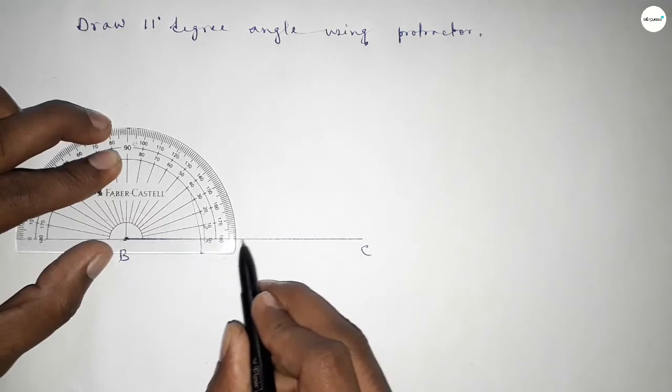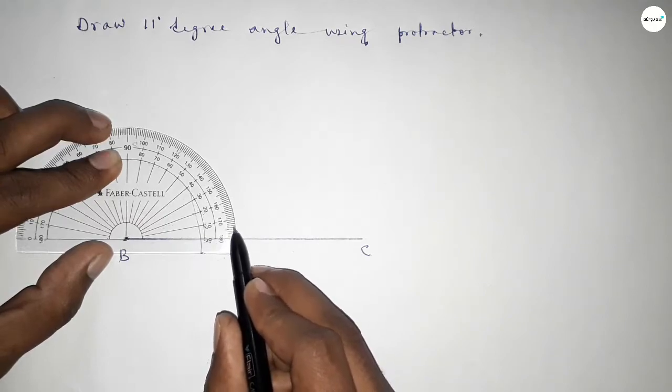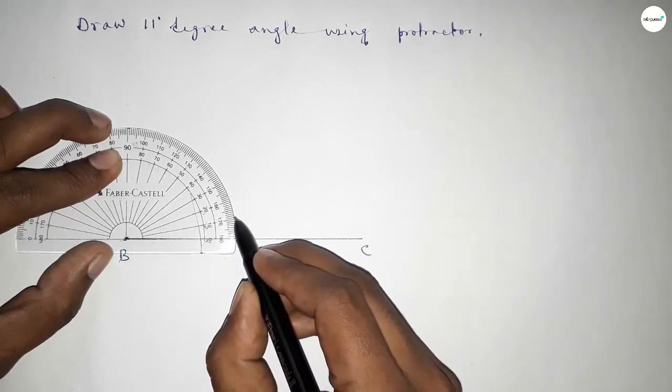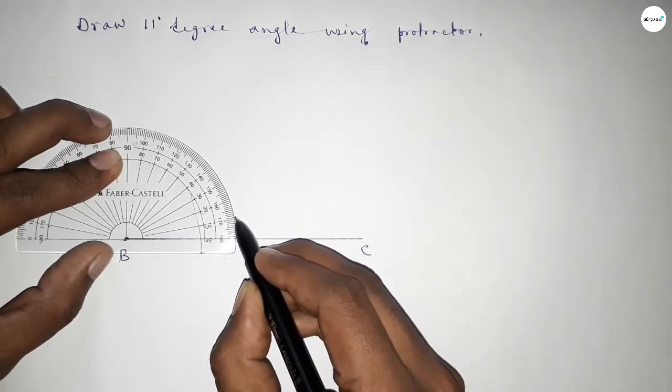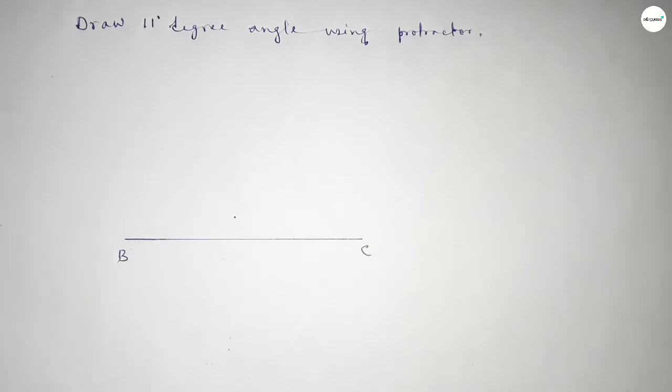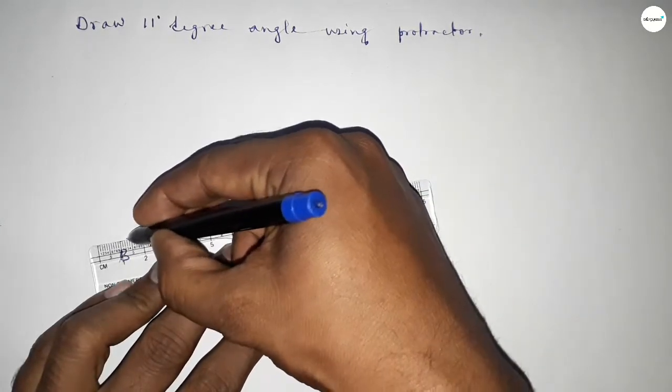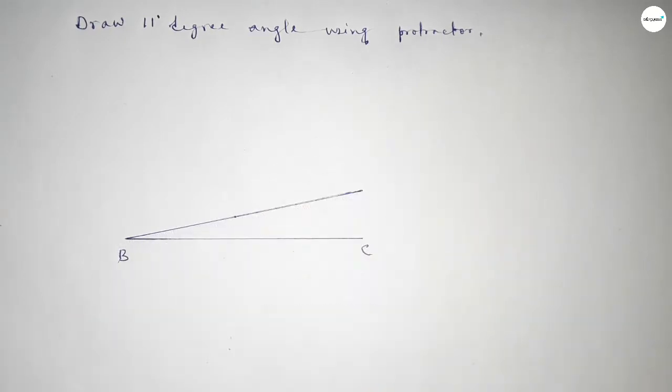And counting 11 degrees, so starting 0, 1, 2, 3, 4, 5, 6, 7, 8, 9, 10, 11. This is 11 degrees. Now joining this to get 11 degree angle and taking here point A.